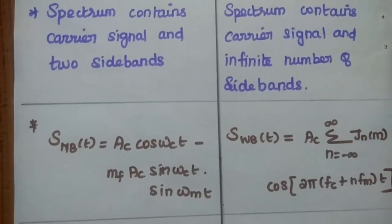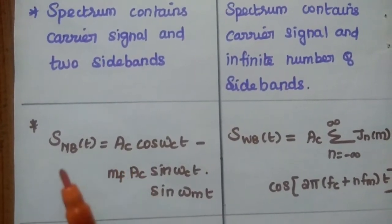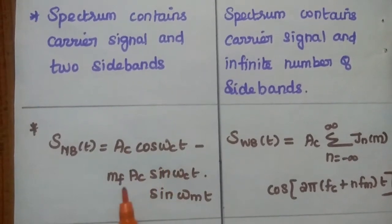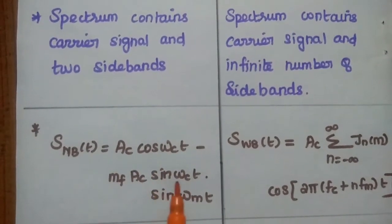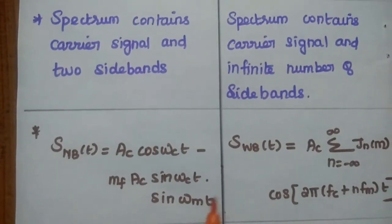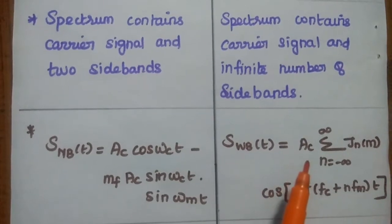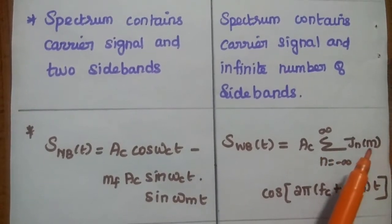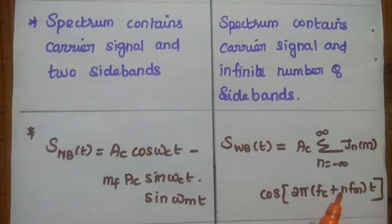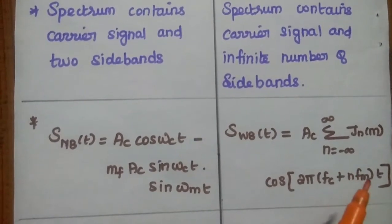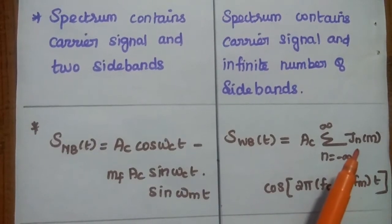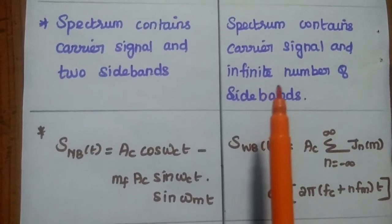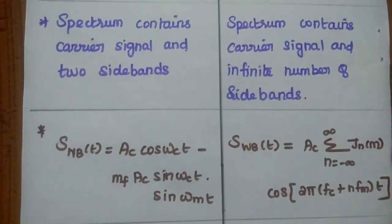The narrowband FM signal can be represented as: AC cos(omega_C * t) minus MF * AC * sin(omega_C * t) * sin(omega_M * t). The wideband FM signal can be represented as: AC * summation from N equals minus infinity to infinity of J_N(M) * cos(2*pi*(FC + N*FM)*t), where J_N is the Bessel function. Due to this Bessel function, we have an infinite number of sidebands.